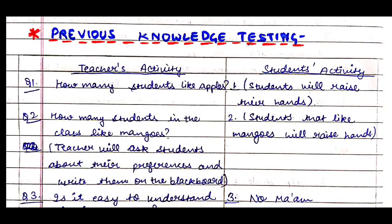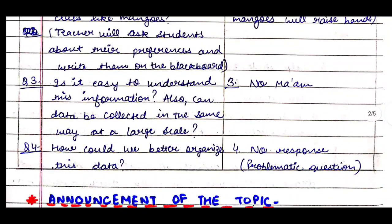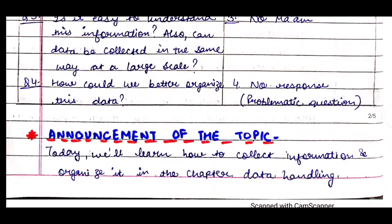The first question would be: how many students like apples? Students will raise their hands — that is the student's activity. Next, we ask how many students like mangoes, and the teacher writes their preferences on the blackboard. Then we ask: is it easy to understand this information, and can data be collected in the same way at a large scale? Students will say no. Then we ask: how could we better organize this data? There would be no response, as this is a problematic question that leads to our topic.